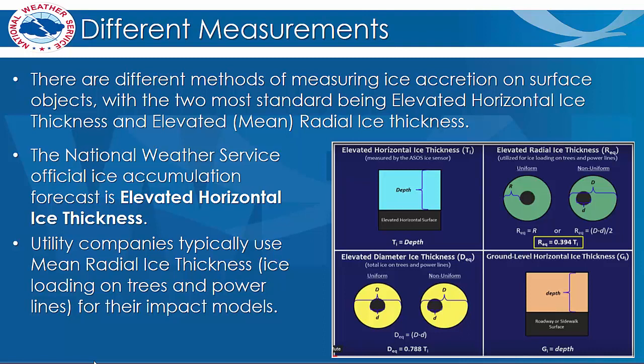When measuring ice around a power line, there are additional ways of measuring the ice depending on whether the ice has accumulated uniformly or non-uniformly around the object. Utility companies mostly use mean radial ice thickness in their impact models. Fortunately, there are simple mathematical formulas that can be used to convert between the different measuring methods.